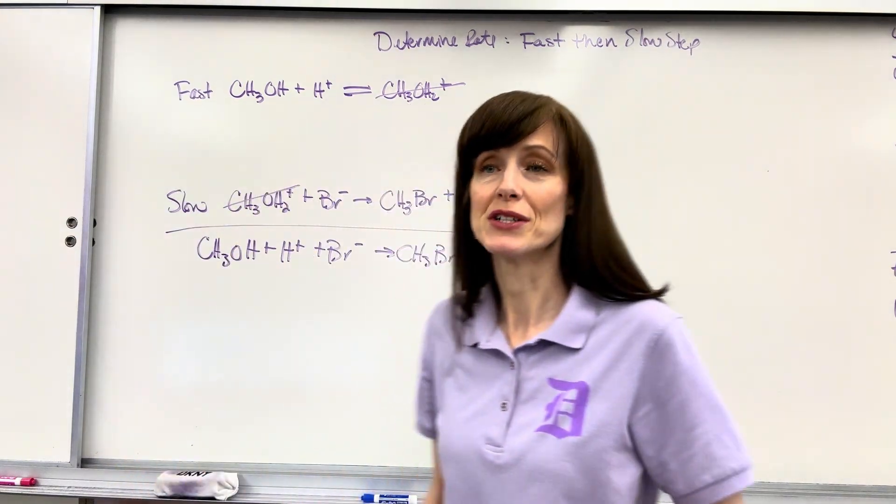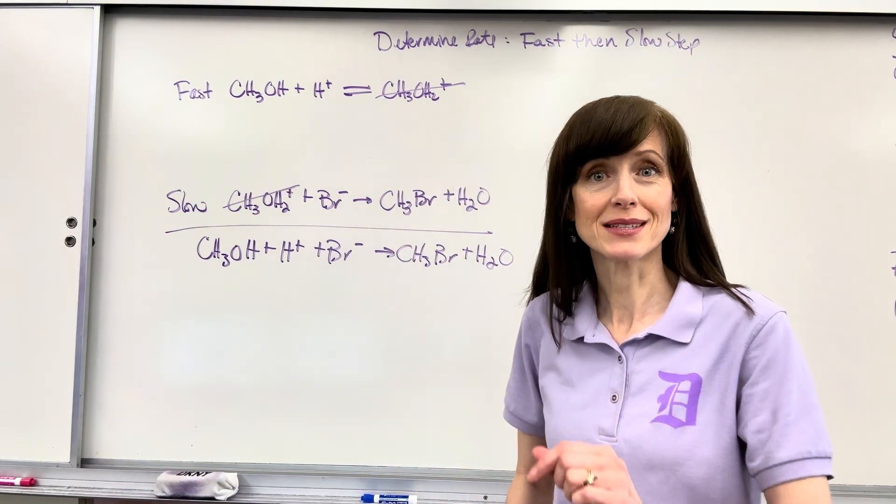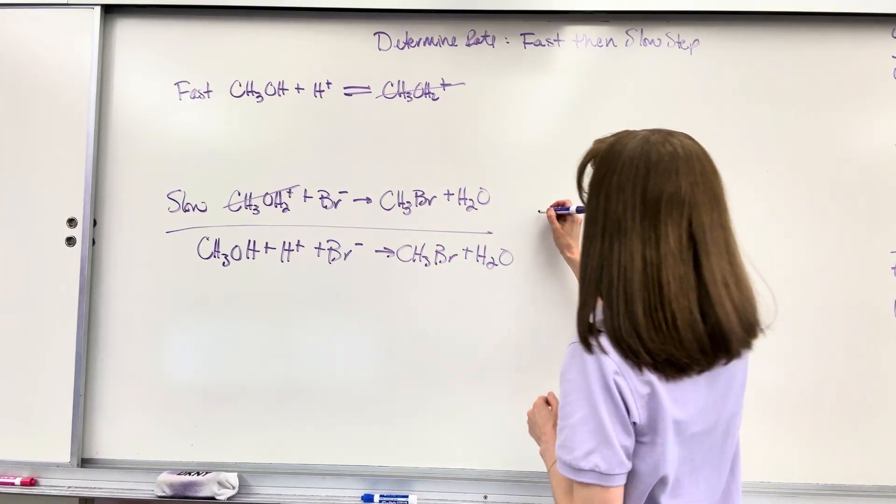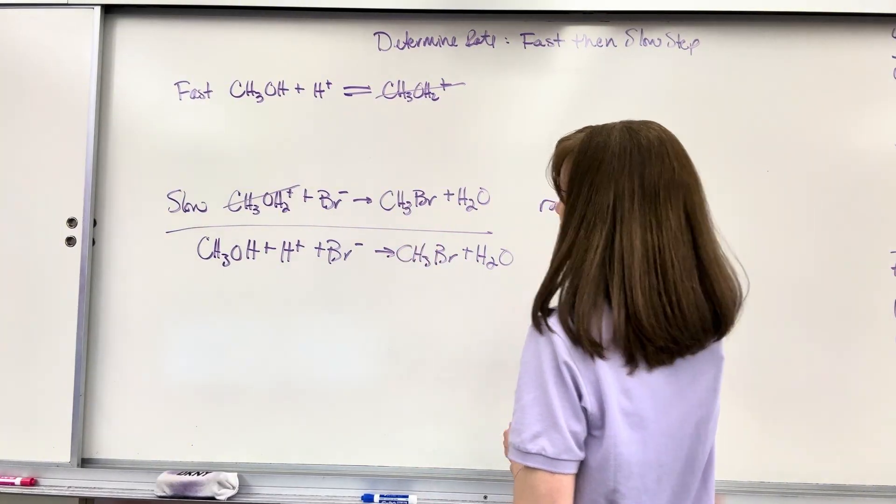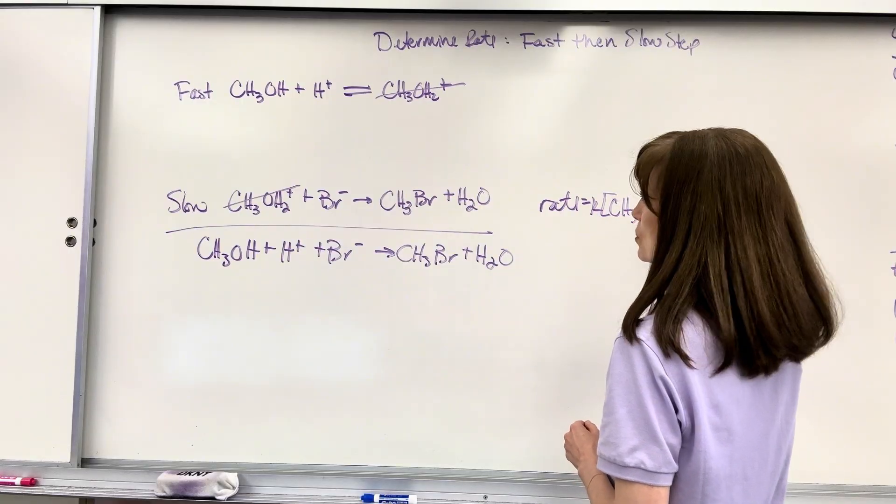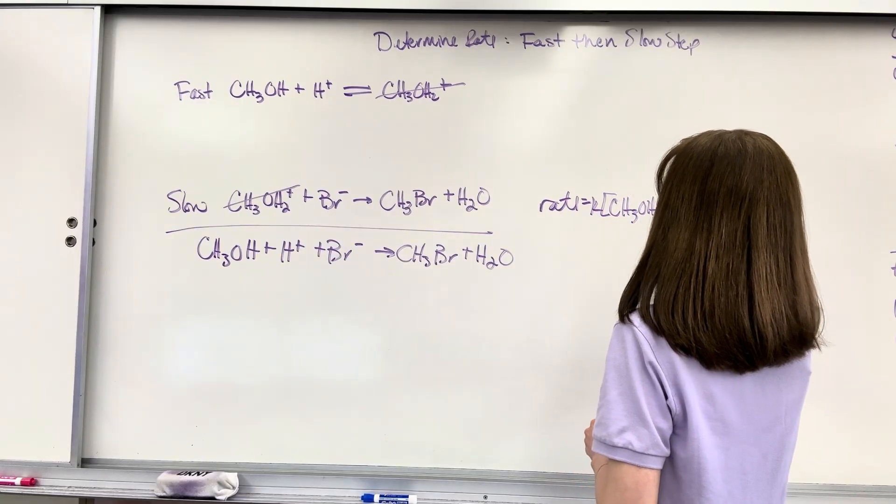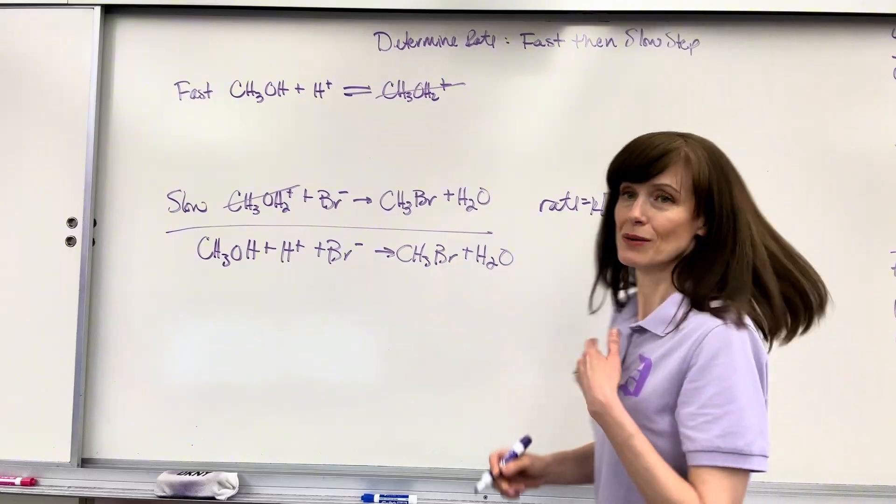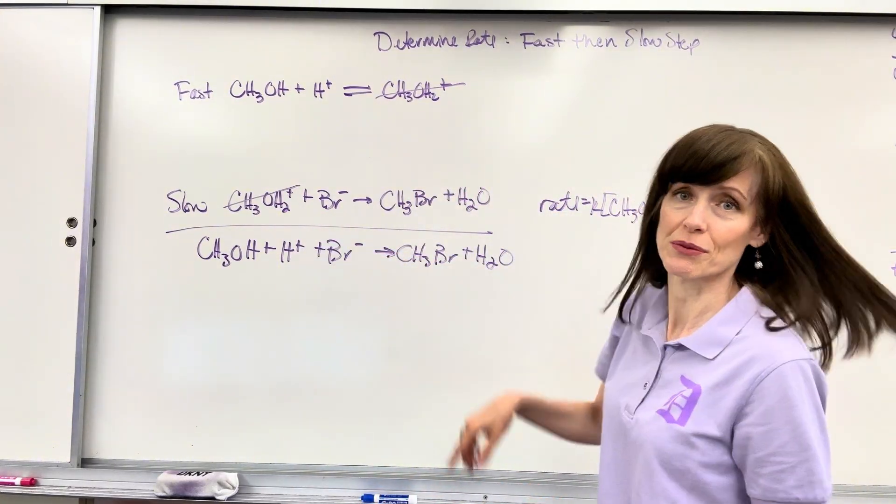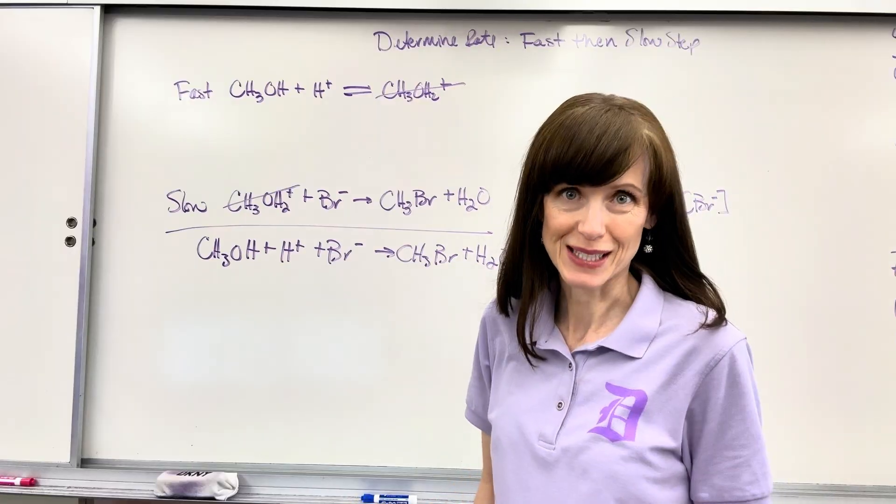Second, I'm going to write the rate law from the rate determining step. That's the slow step. Our rate law is going to be rate equals K times CH3OH2+ times Br-. I notice the intermediate is part of the rate law and that is not acceptable.